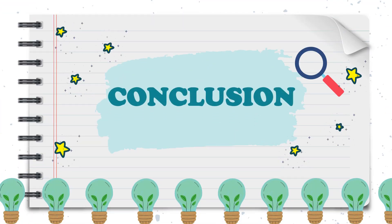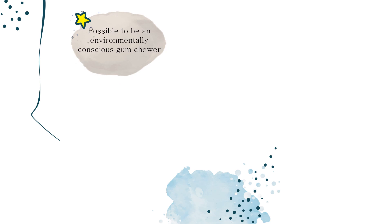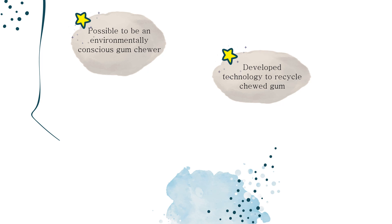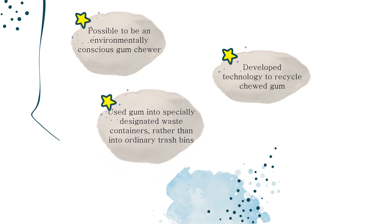Conclusion. Some countries, like Singapore, have already started to crack down on bubble gum, banning it unless people have a medical reason to chew it. Even without a government ban, it's possible to be an environmentally conscious gum chewer. Worldwide, humans chew about 560,000 tons of gum each year. A few entrepreneurial greenies have developed technology to recycle chewed gum, turning it into rubber containers and children's toys. But that means chewers would have to throw their used gum into specially-designated waste containers rather than ordinary trash bins.